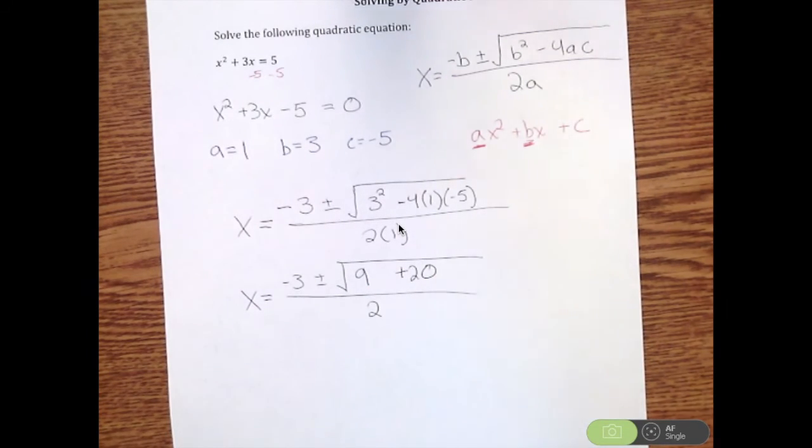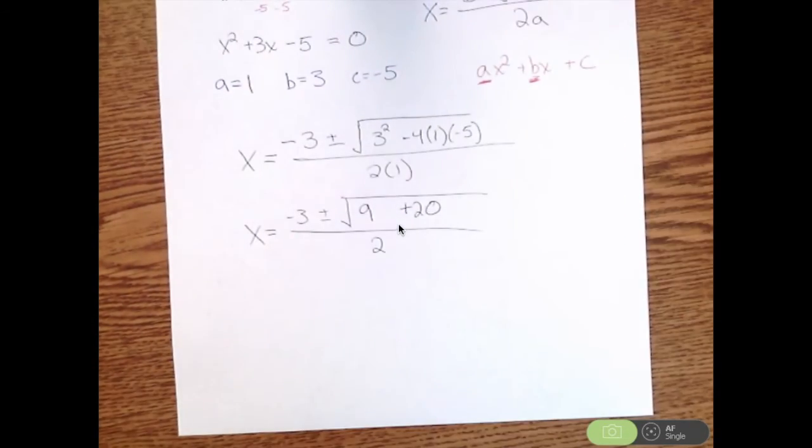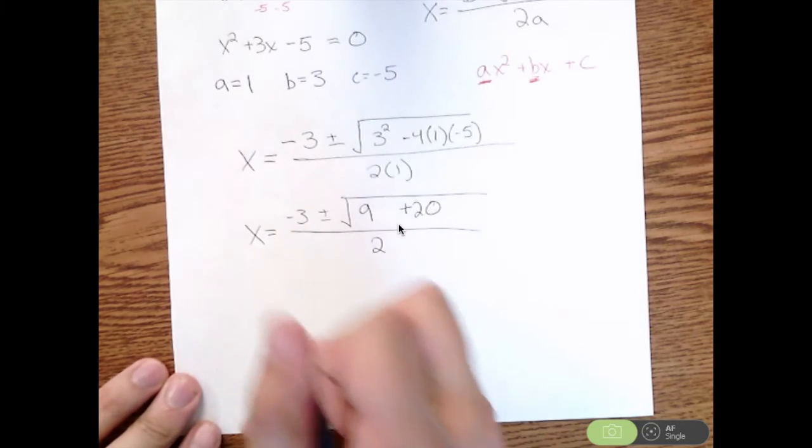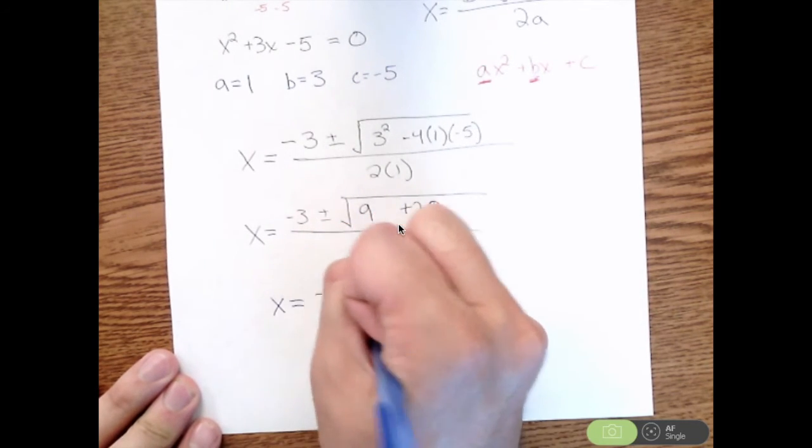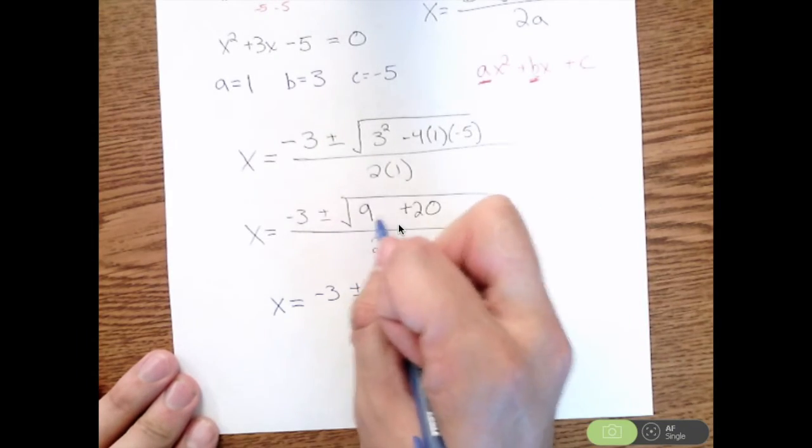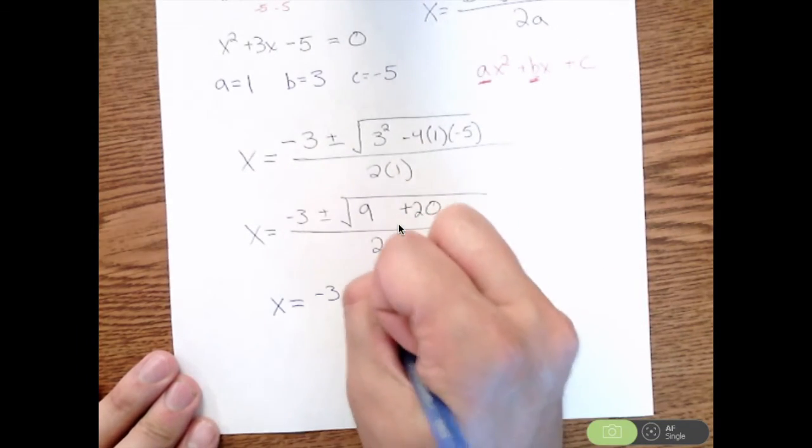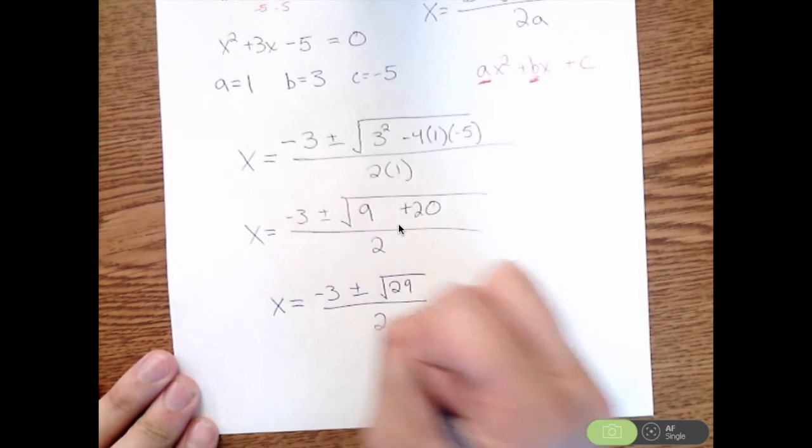So I'm slowly progressing through all my steps so I can get to a simplified solution. Next step, still working on the inside here. I'm going to have x equals negative 3 plus or minus, and I'm going to do 9 plus 20, which is 29, still divided by 2.